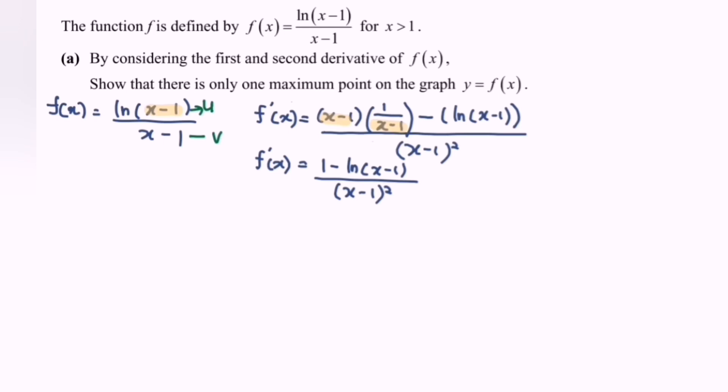Next we are going to find the second derivative. Again, let u = 1 - ln(x-1) and v = (x-1)². Now find the second derivative.